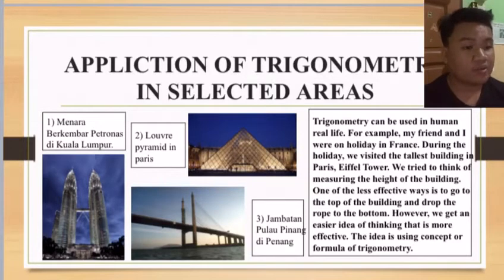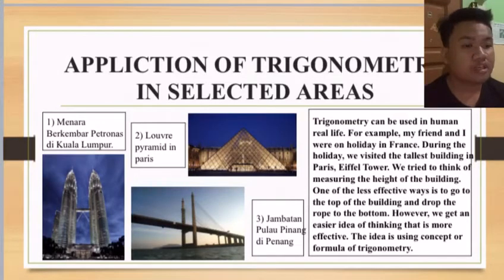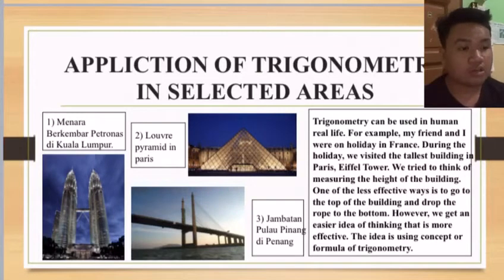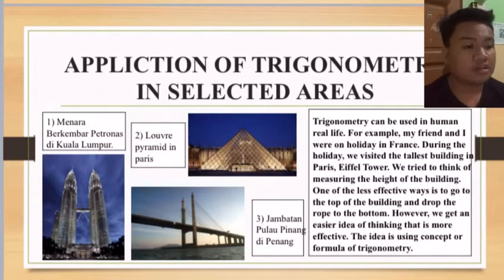My friend and I were on holiday in France. During the holiday, we visited the tallest building in Paris — the Eiffel Tower. We tried to think of a way to measure the height of the building. One of the less effective ways is to go to the top of the building and drop a rope to the bottom. However, we thought of an easier and more effective idea: using the concept and formula of trigonometry.